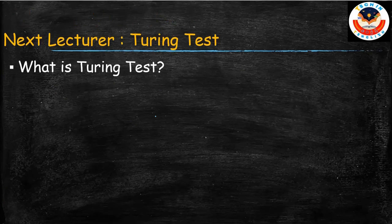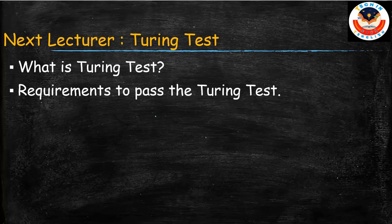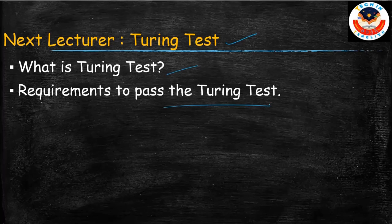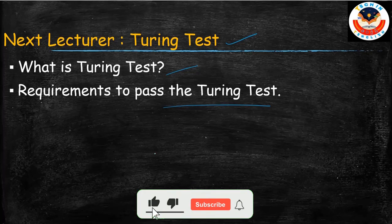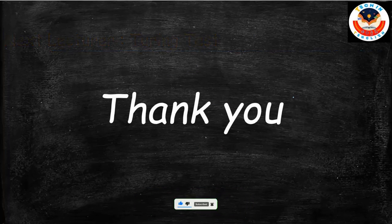So these are the four categories of artificial intelligence. In the coming video we will be looking at the Turing test and what requirements must be met to pass it. This is the first video of this lecture series. If you found it useful, please like, share, and subscribe to my channel. I will come up with the next video — till then, thank you.